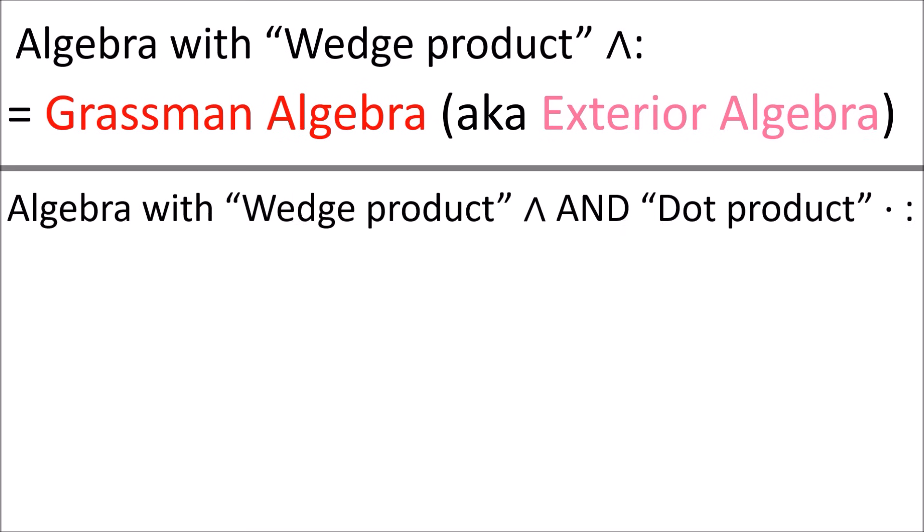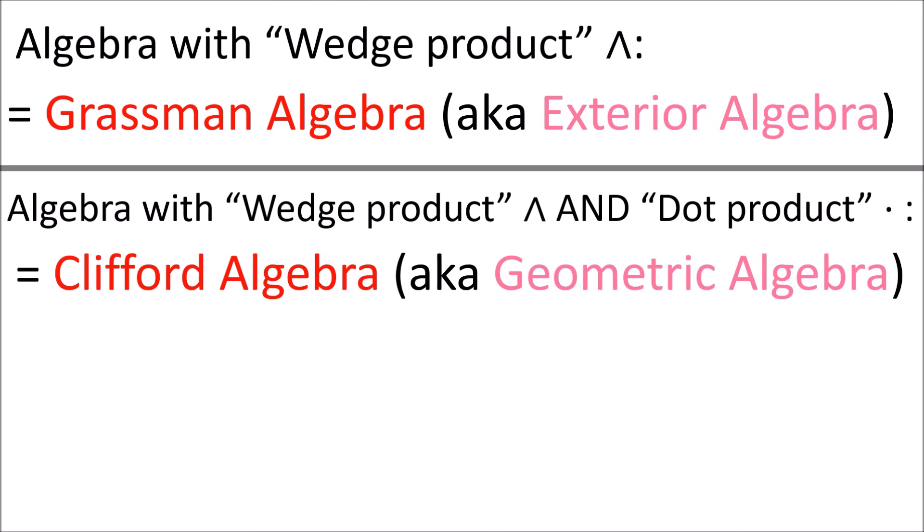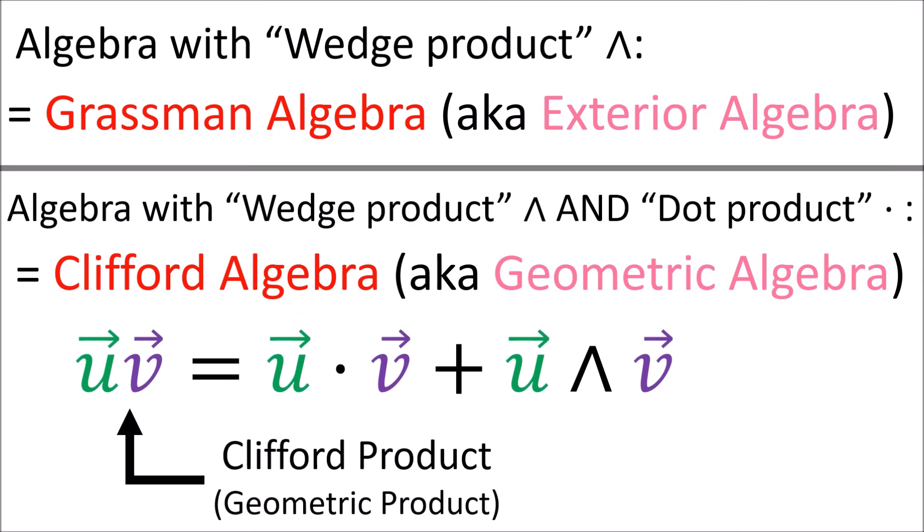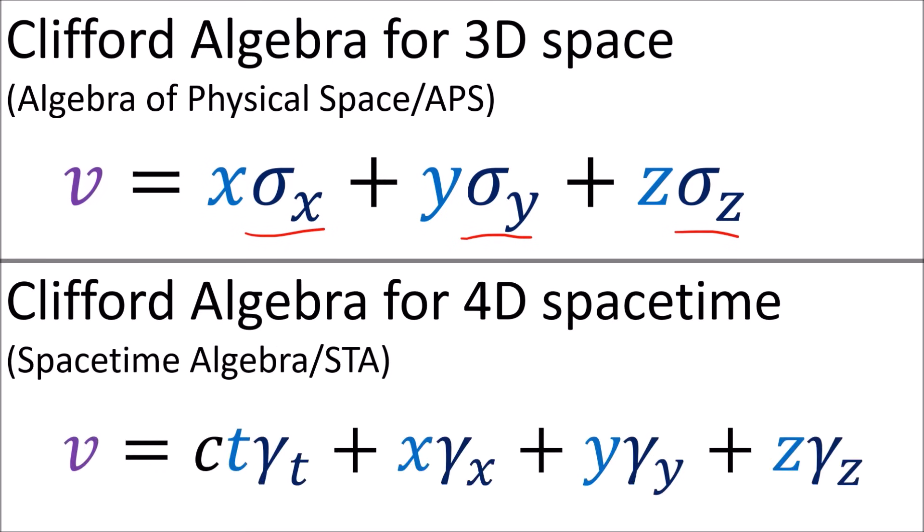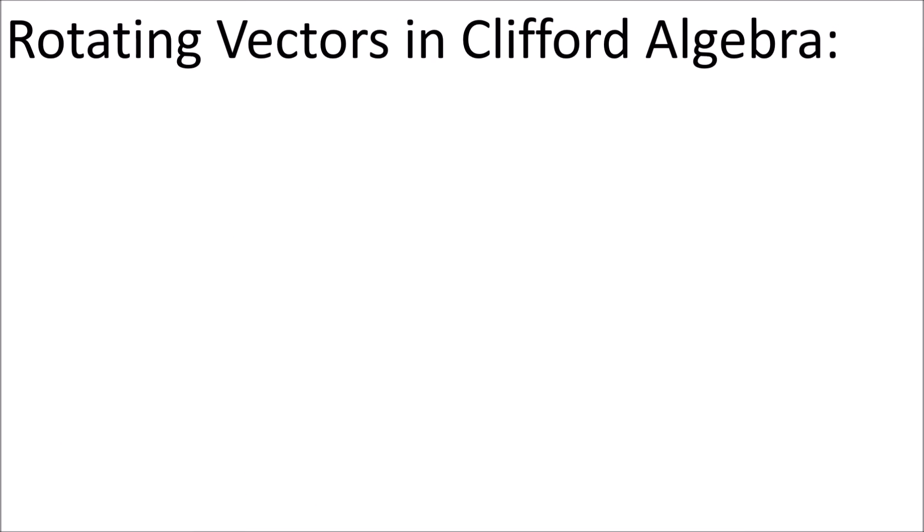An algebra with the wedge product is called a Grassmann algebra, or sometimes an exterior algebra. When an algebra has both a wedge product and a dot product, we call it a Clifford algebra, also called a geometric algebra. The Clifford product of two vectors is like a combination of the dot product and the wedge product. In the Clifford algebra for 3D space, the basis vectors are the sigmas we saw before, and in 4D spacetime the basis vectors are the gammas.